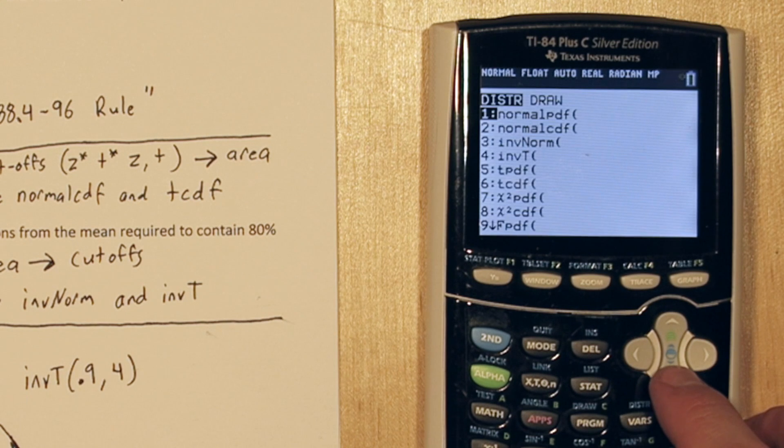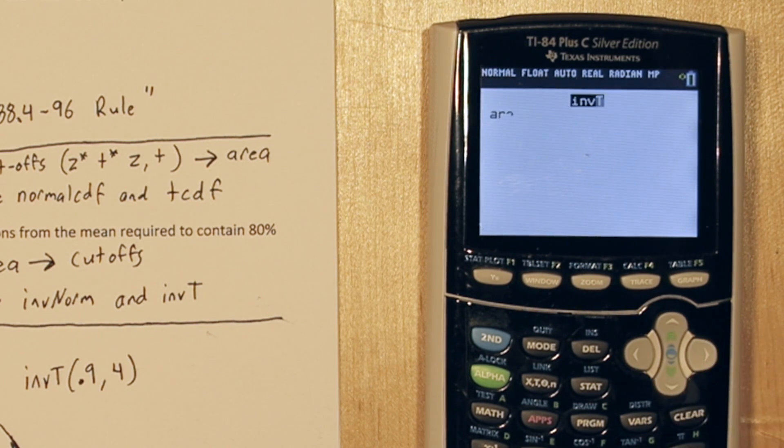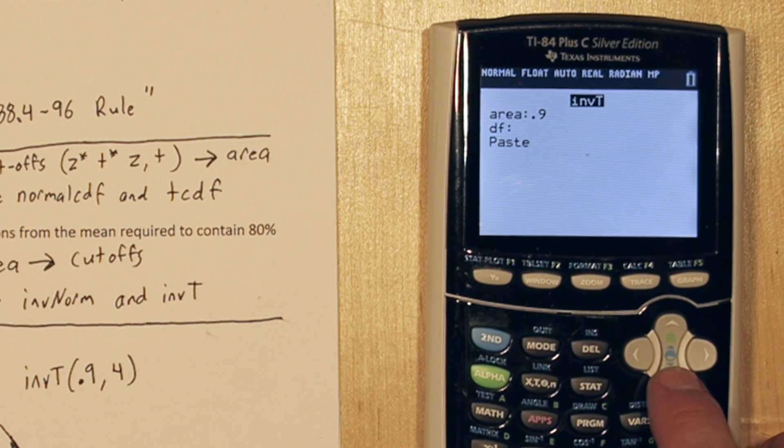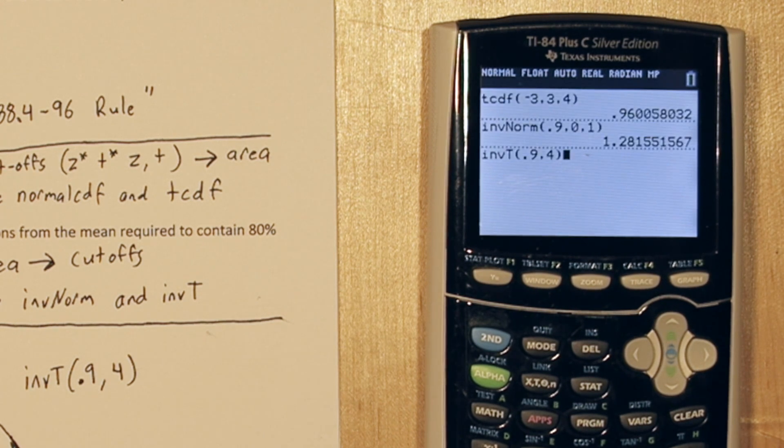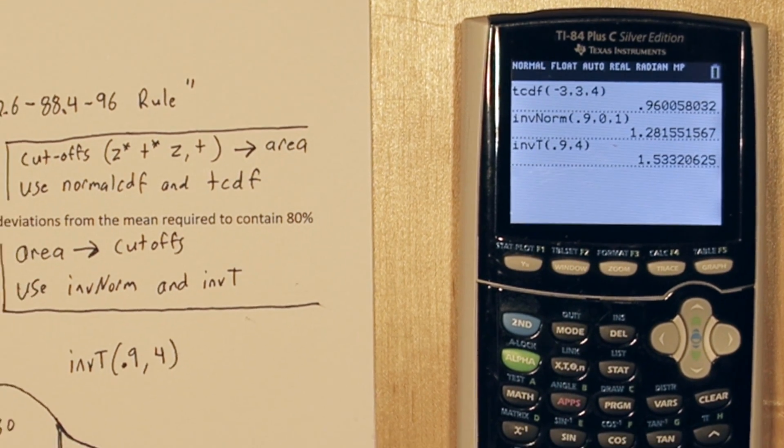Press 2nd, vars, go down to inverse t, and type 0.9, for degrees of freedom put 4. And we see for t, we have to go about 1.53 standard deviations out to capture the middle 80% of the distribution.